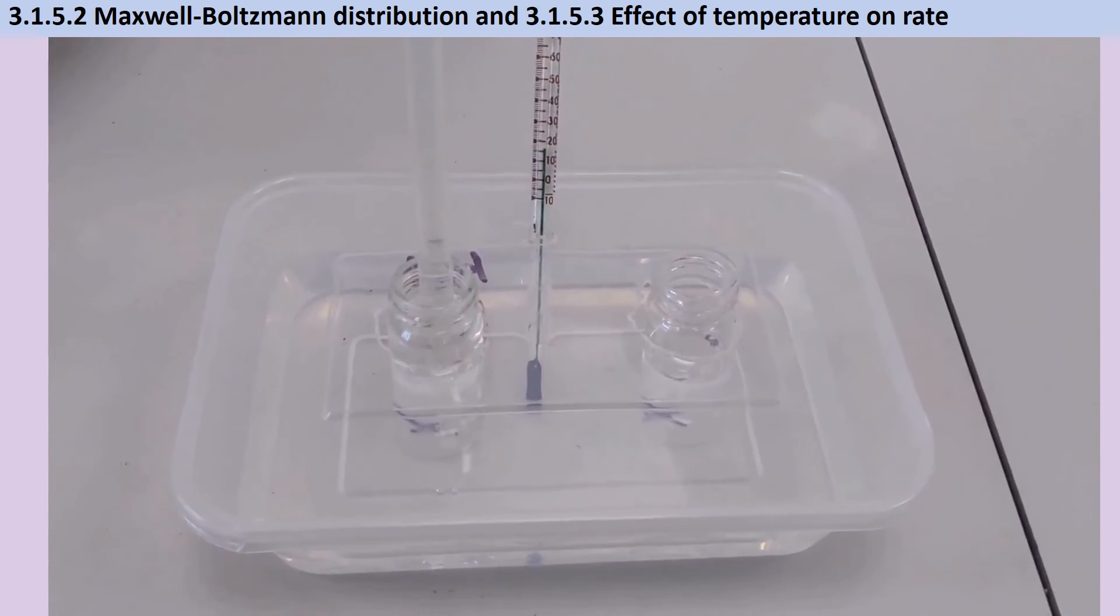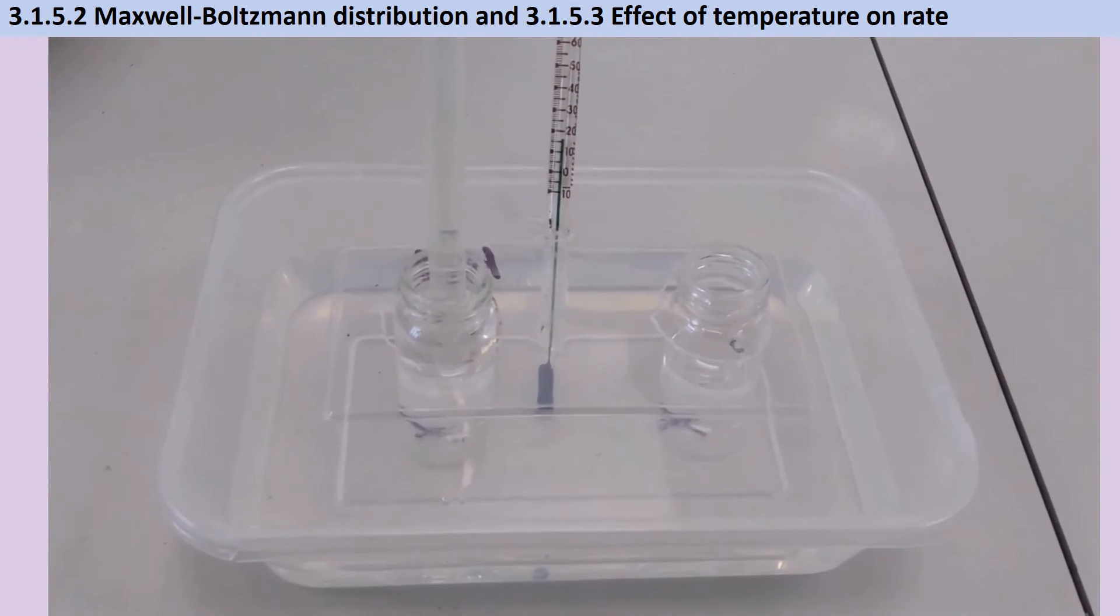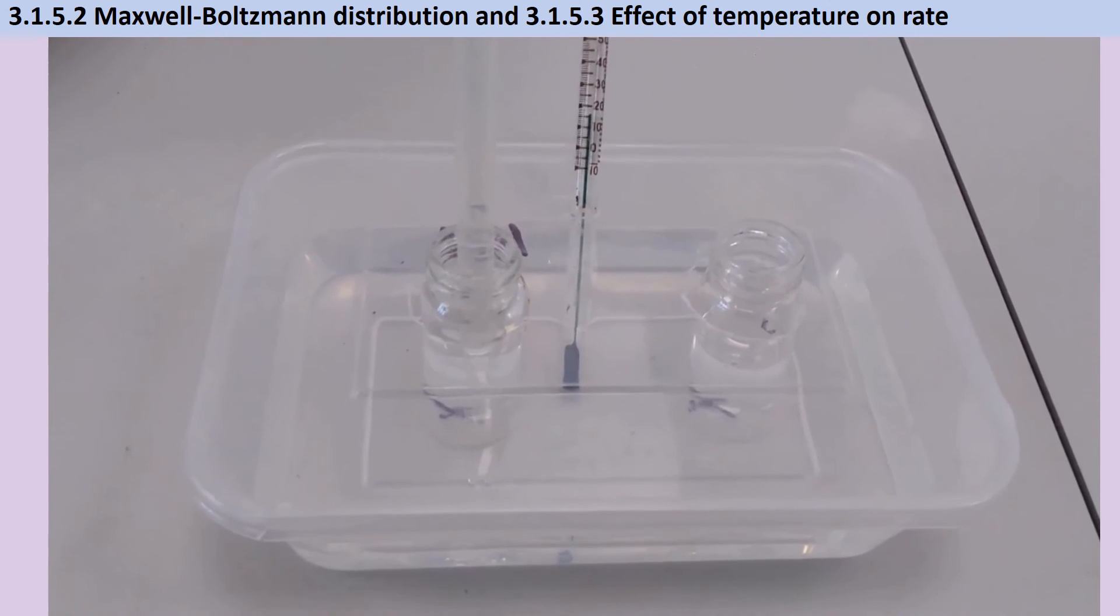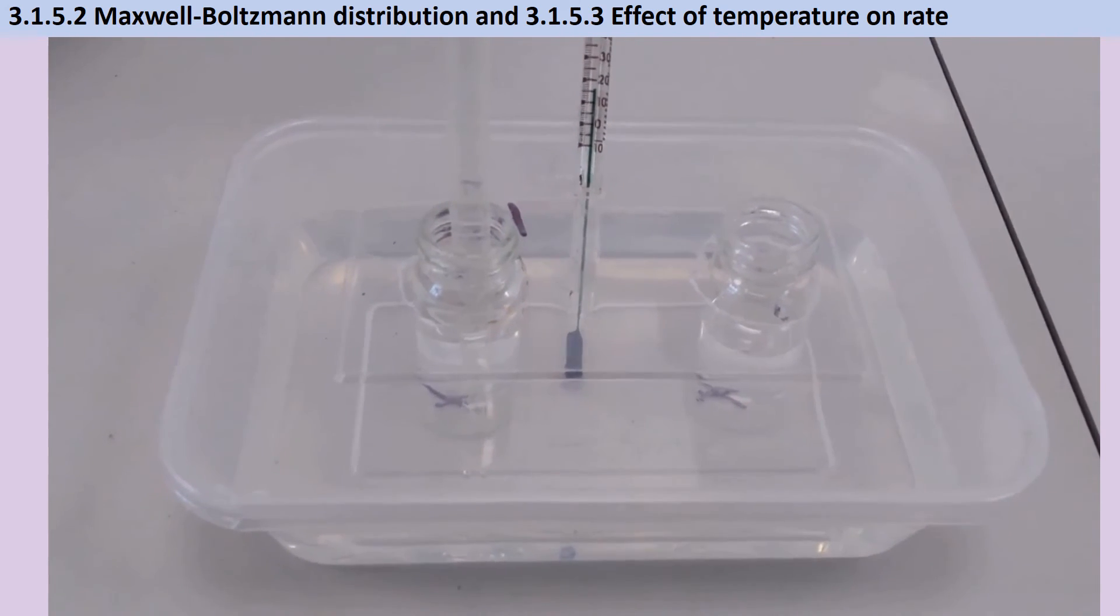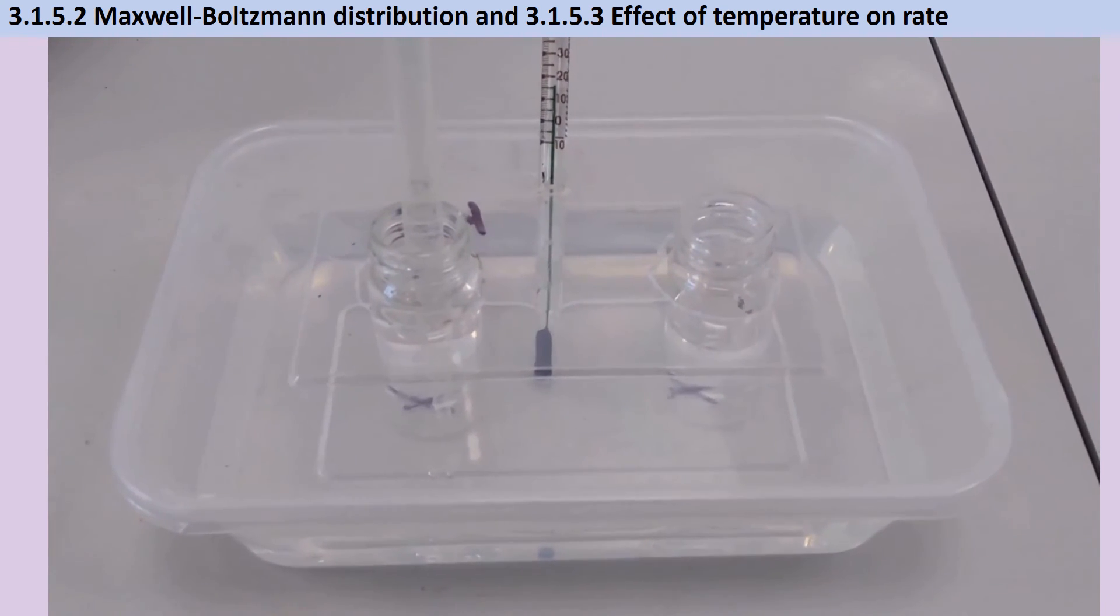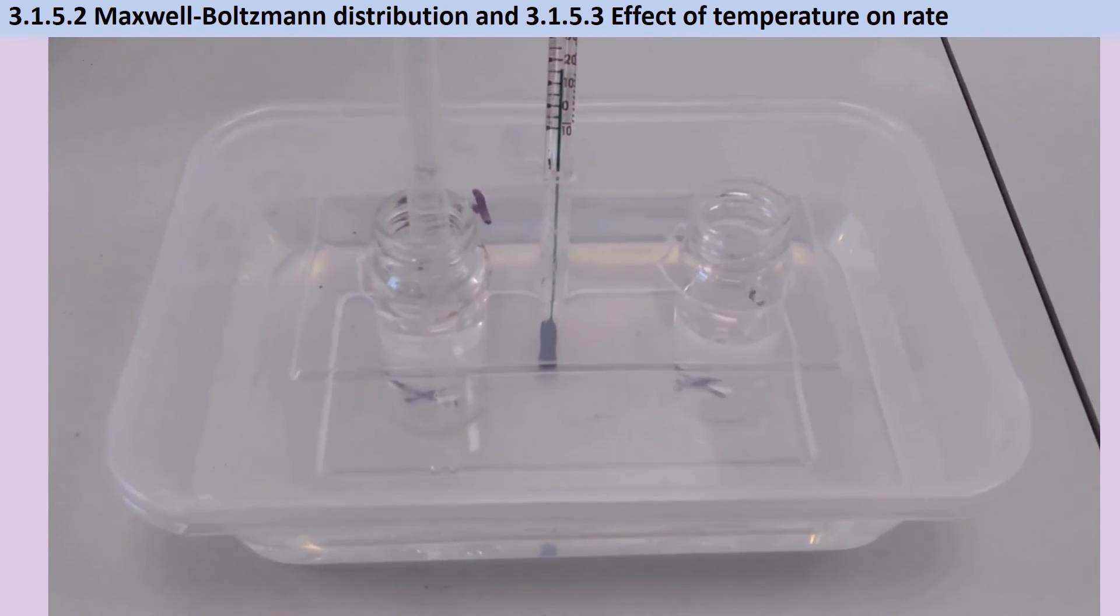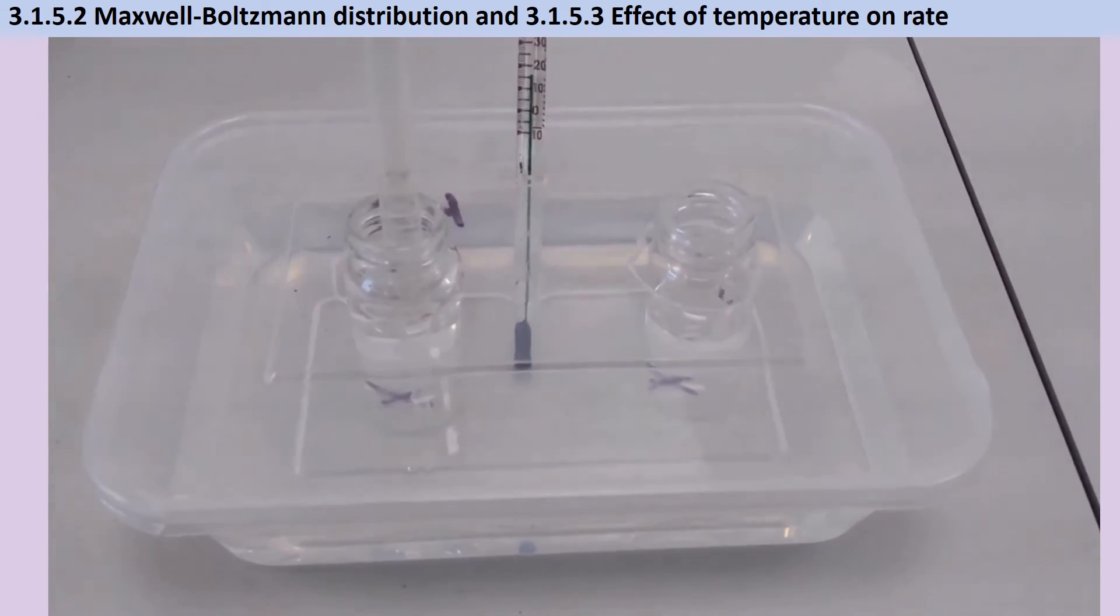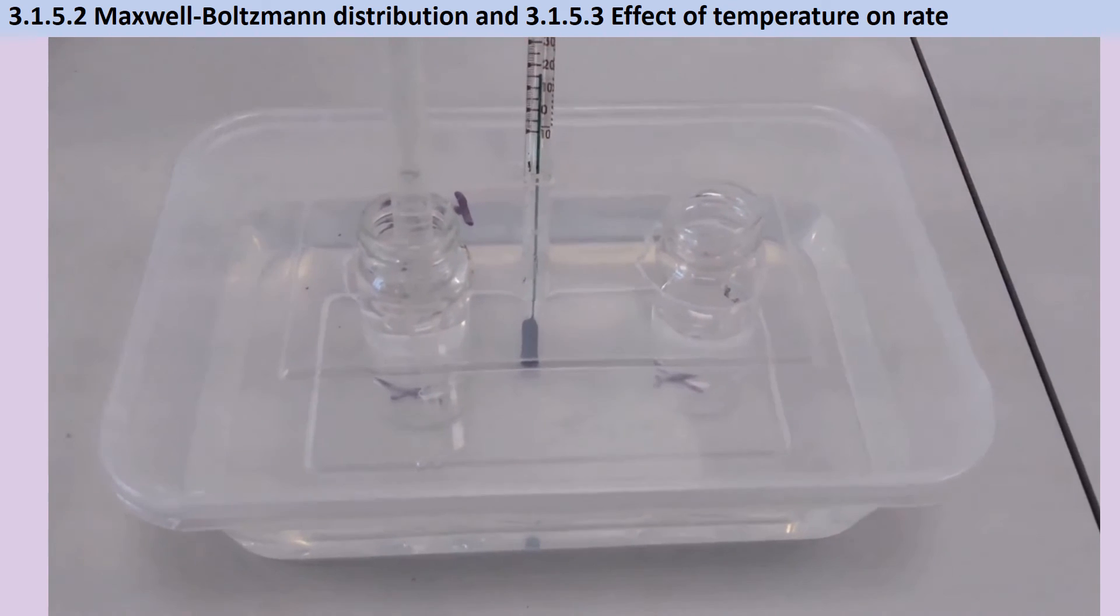Here's the setup for the required practical. So I've got two McCartney bottles and one contains some one mole of hydrochloric acid and the other one contains some sodium thiosulfate. And they are in a water bath made out of a takeaway container and that's got some water in it which in this instance is just at room temperature but later on I can repeat this using water that's been warmed in a kettle but not higher than 55 degrees because as we know one of the products of this reaction is sulfur dioxide which is really quite irritant and not good for your lungs so we want to minimize how much of that is being produced.